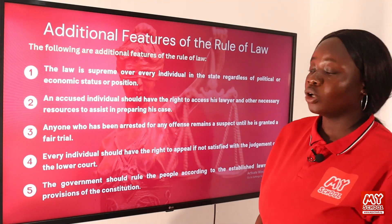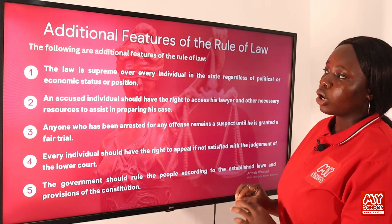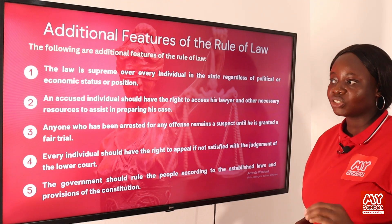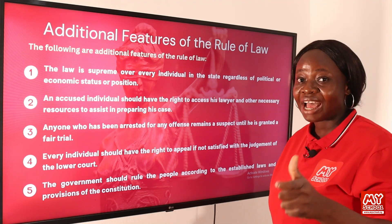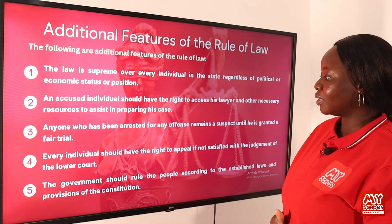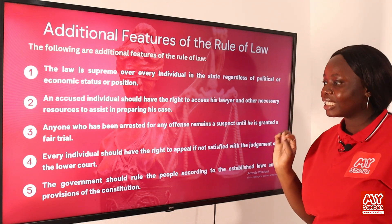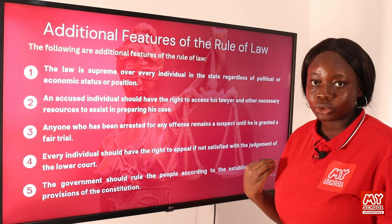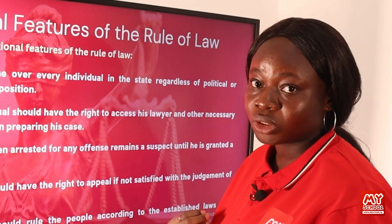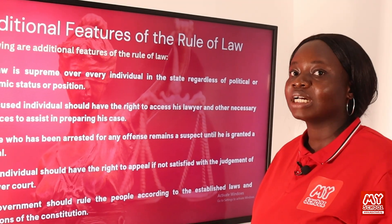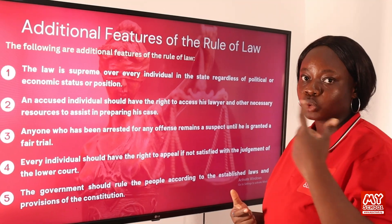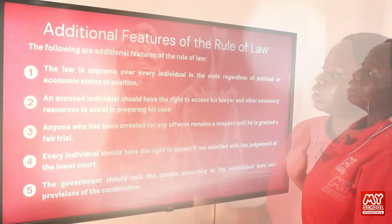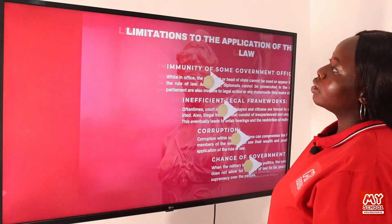There are several additional features of the rule of law. The law is supreme over every individual in the state regardless of political or economic status. An accused individual should have the right to access a lawyer and other necessary resources to assist in preparing their case. Anyone arrested for any offense remains a suspect until granted a fair trial. Every individual should have the right to appeal if not satisfied with the judgment of a lower court, and the government should rule the people according to the established laws and provisions of the constitution.